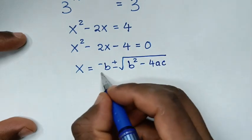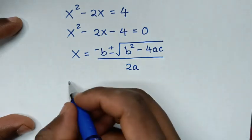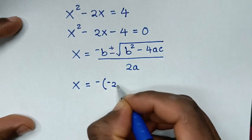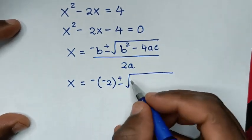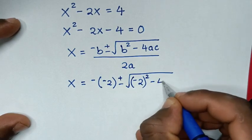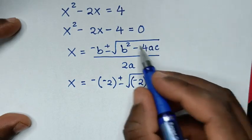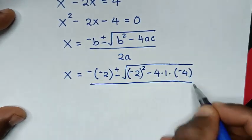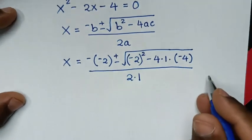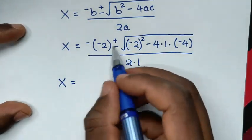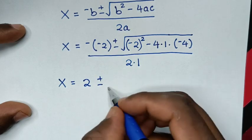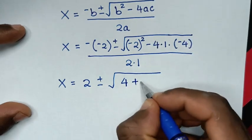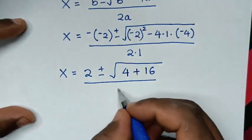So it will be x equal to negative b — b is the coefficient of x which is negative 2 — so negative of negative 2, plus or minus square root of b square, which is negative 2 squared, then minus 4 times a which is 1, times c which is negative 4, all over 2 times a which is 1. Negative of negative 2 is positive 2, negative 2 squared is positive 4, and negative 4 times negative 4 is positive 16, over 2.